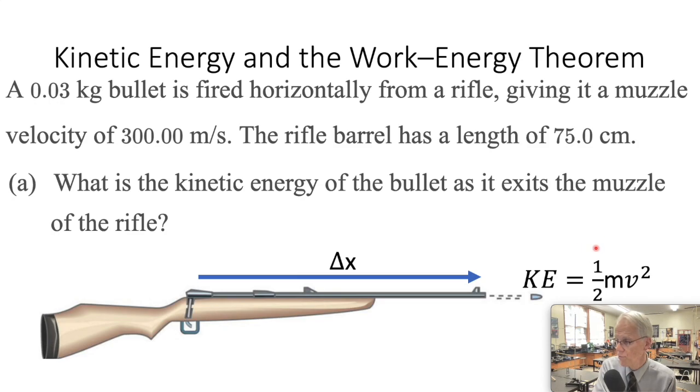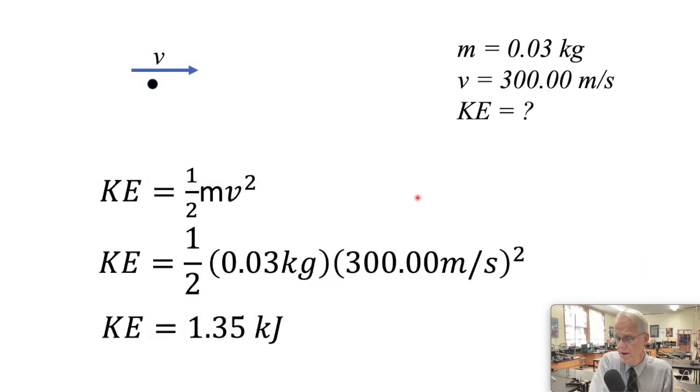Well kinetic energy is one half mass times velocity squared. Here's our basic problem solving format. We will write down our knowns. We know the mass. We know the velocity. We're trying to find the kinetic energy. We have a sketch here. It's kind of like a free body diagram, except we're not dealing with any forces here. So we just have the mass and the velocity.